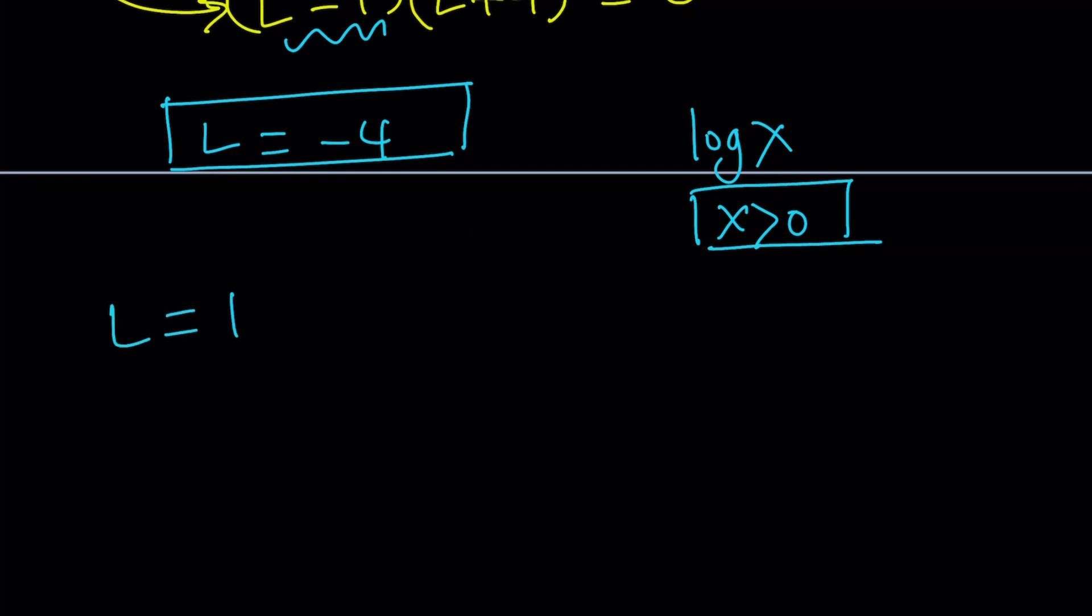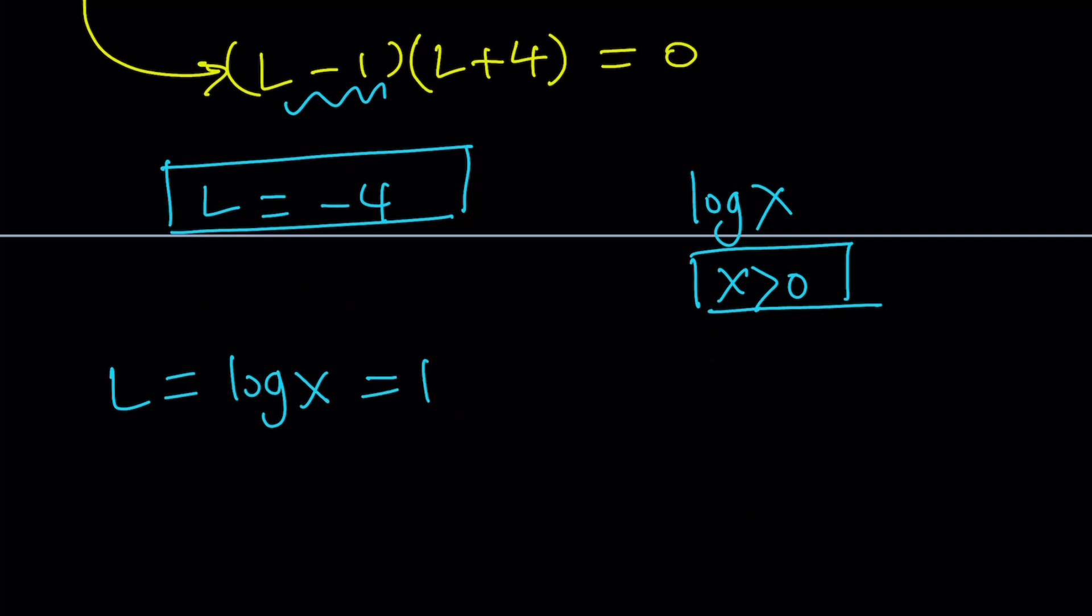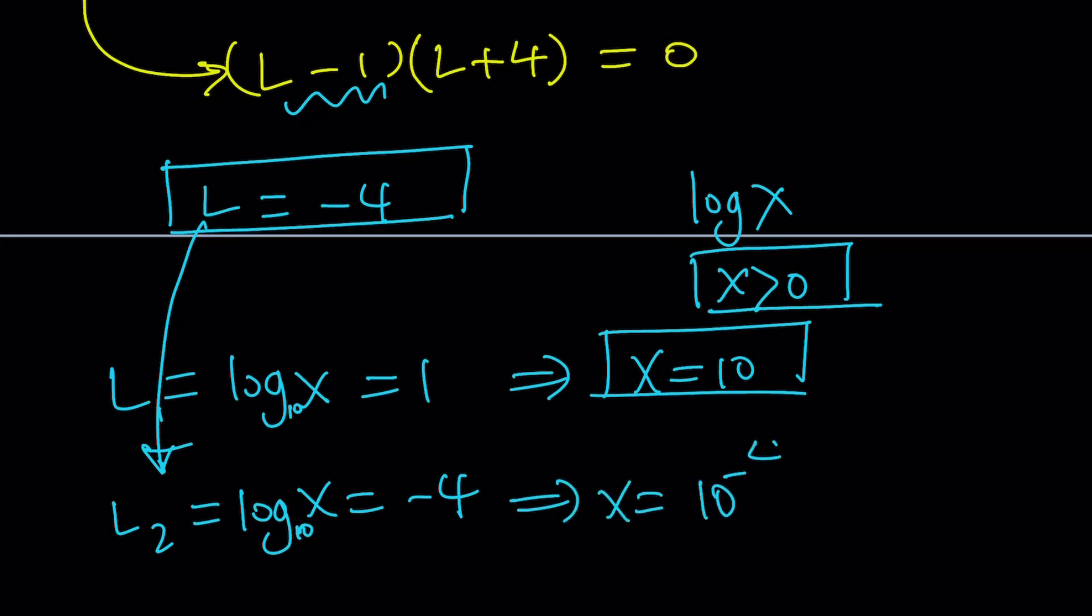L equals log x, and we know log x is equal to 1. From here we get x equals 10. The base is 10, so by using the definition of logs, or you can do 10 to the power of both sides to get the answer. L sub 2 is again log x, but this time it's negative 4. If log x is negative 4, then we have the base 10, so x becomes 10 to the power of negative 4. You can write this as 1 over 10,000. The number of 4 is the number of zeros, basically. So that gives us a very small solution.